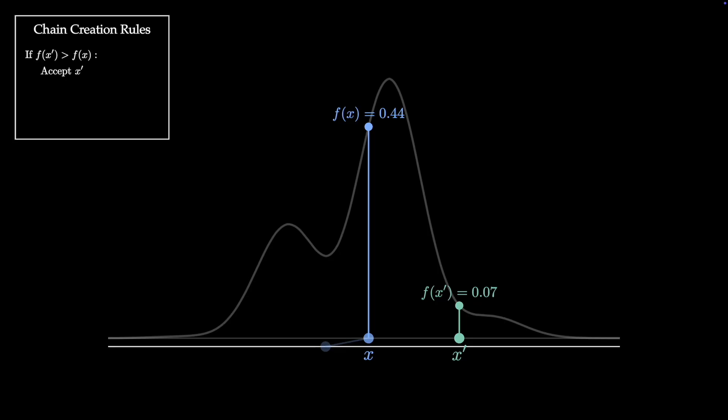This time, the proposed point has a lower density than the current point, so we move on to the second rule which says that we should accept this proposed point with probability proportional to how much less likely it is. So in this case, we should accept it with probability 0.15. One simple way to do this is to sample a random number between 0 and 1 and accept the sample if that number is less than 0.15. In this case, our sample tells us to accept. So we accept the proposed sample and add it as the next point in the chain.